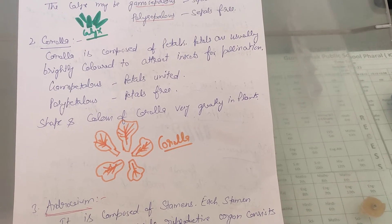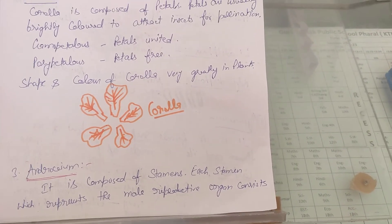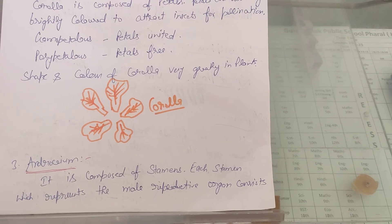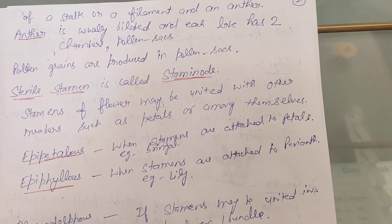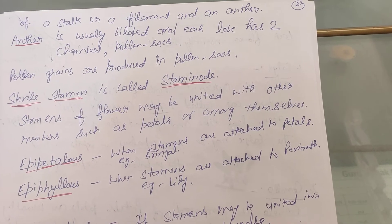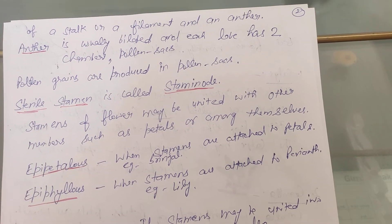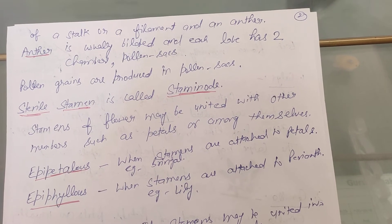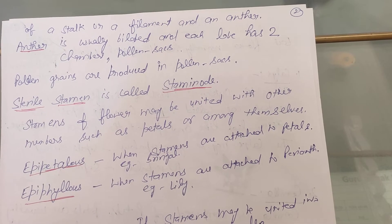Next comes the androsium. It is composed of stamens, and each stamen represents the male reproductive organ. Each stamen consists of a stalk called the filament and a second part called the anther. The anther is the male reproductive organ, which is bilobed.